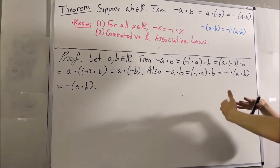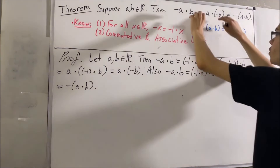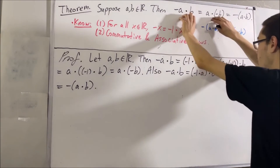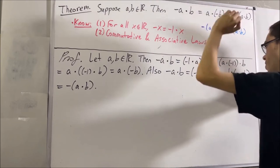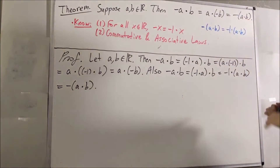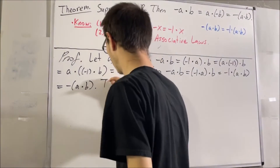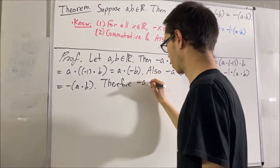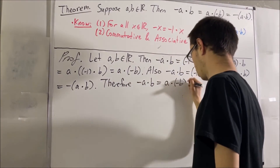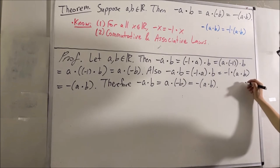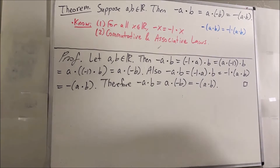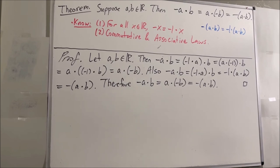Putting this all together, we've shown that the first two are equal and the last two are equal. Therefore, all three must be equal to each other. And so this completes the proof. That's pretty much it for this video.